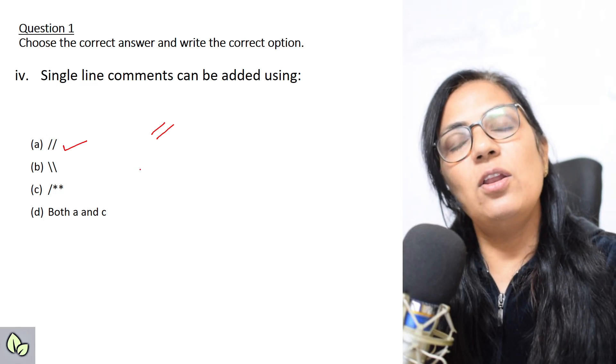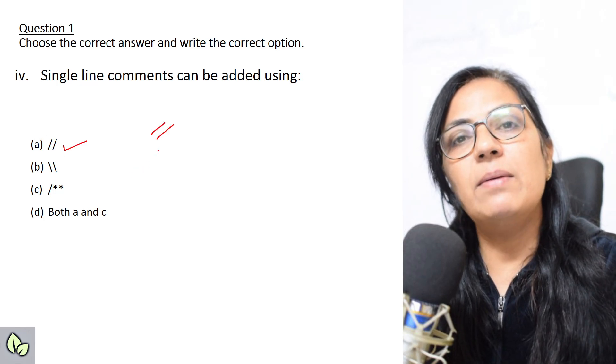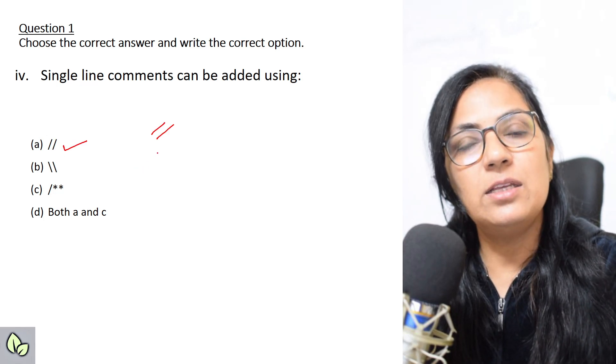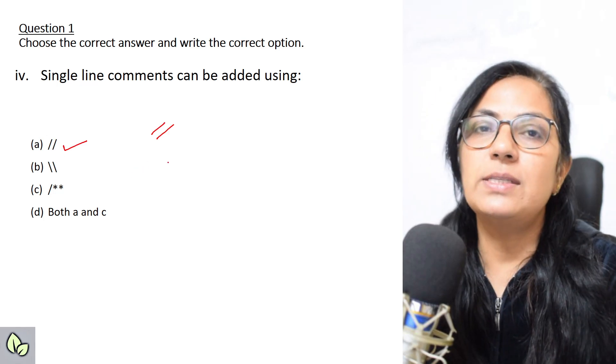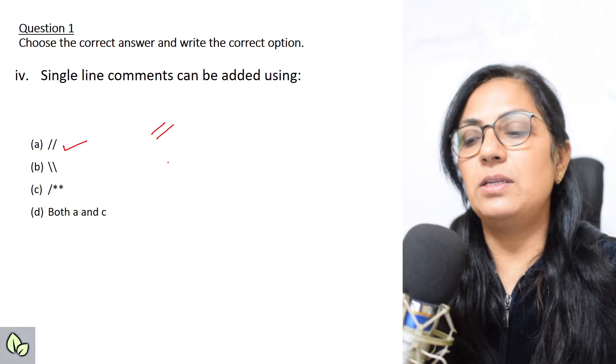Next question: single-line comments can be added using — double slash, backslash, double slash asterisk, or asterisk — both A and C. All of us know that the double slash sign (//) is used for single-line comment entries, and that is also in your syllabus.